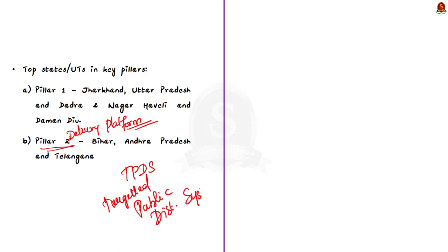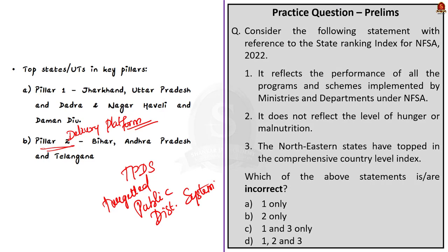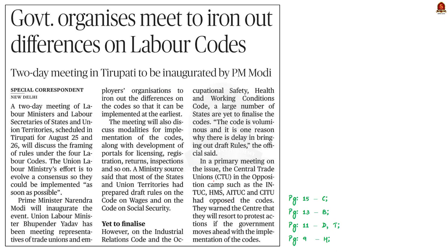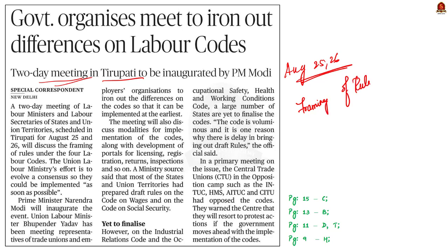That's all about this news article. We saw about the National Food Security Act index, which is very important for both your preliminary and mains examination. Now let's move on to the next news article, which mentions a two-day meeting of labour ministers and labour secretaries of states and union territories. The meeting is planned by the government and scheduled in Tirupati for August 25 and 26. It will discuss the framing of rules under the four labour codes with the objective of evolving consensus so that the acts can be implemented as soon as possible.